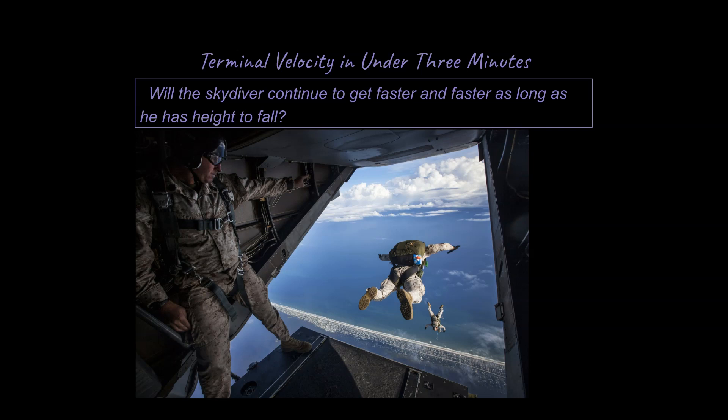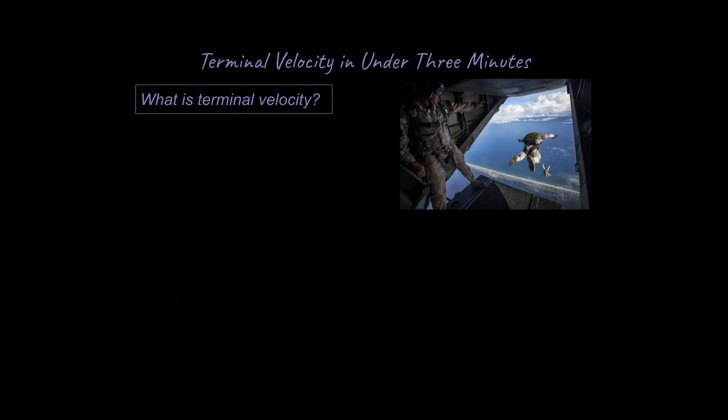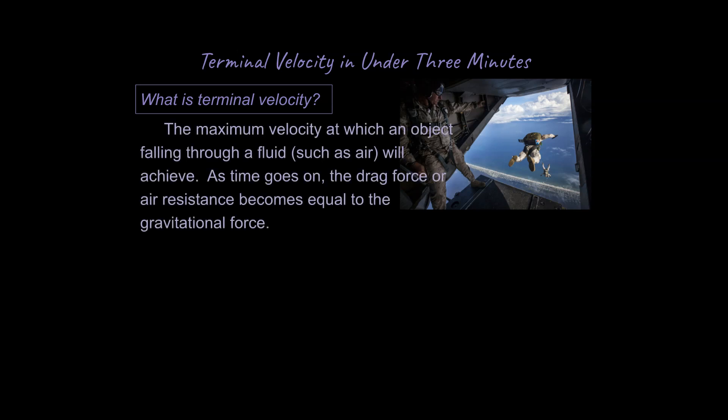So let's think about what that is and how it relates to what we have learned in the past about forces and acceleration. Let's get a definition of terminal velocity going. The terminal velocity definition we're going to use: the maximum velocity at which an object falling through a fluid, like air — air can be thought of as a fluid because it flows — will achieve. And as time goes on, the drag force or air resistance becomes equal to the gravitational force.